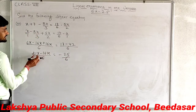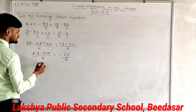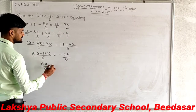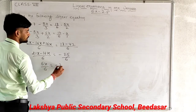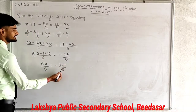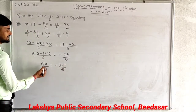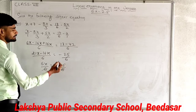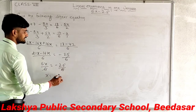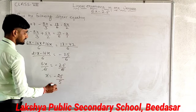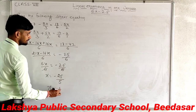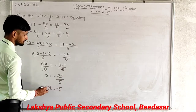So 21x minus 16x gives 5x upon 6, equal to minus 25 upon 6. Since the denominators are the same, cancel them out: 5x equals minus 25, and x equals minus 25 divided by 5. Therefore, the value of x is minus 5.